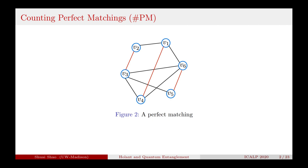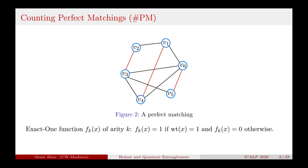Let's see an example. A perfect matching of a graph is a set of edges in which, for each vertex, exactly one edge incident to it is picked. The constraint at each vertex can be represented by the Exact1 function, which takes value 1 if the Hamming weight of its input is 1, and 0 otherwise. So if we let F be the set of all Exact1 functions, then the Holant problem parameterized by this signature set F is just the problem of counting perfect matchings.